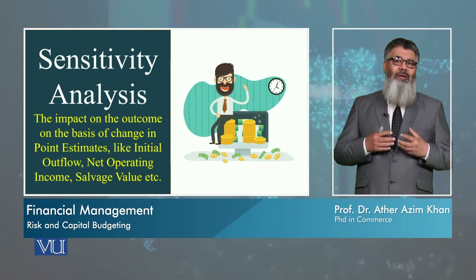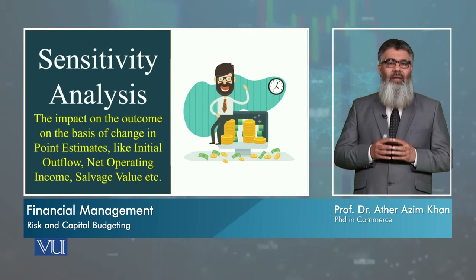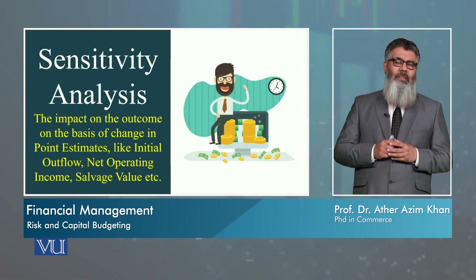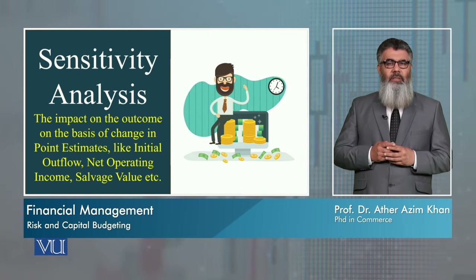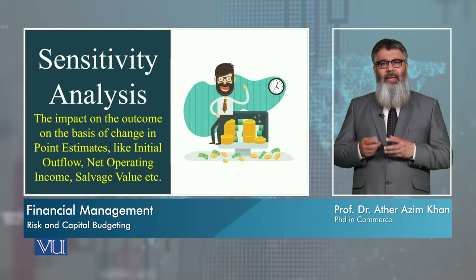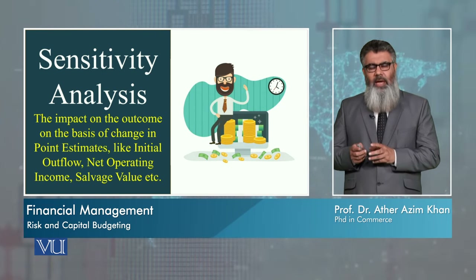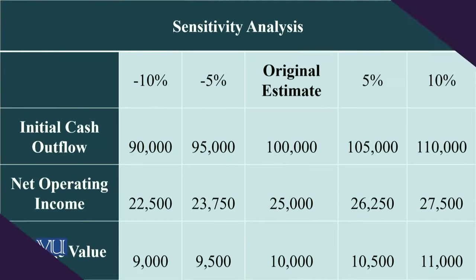In this process, we actually take the initial or original set of data — that is the outflow, the incremental inflows, and the terminal cash flow. Then once we have that, we see that if this goes up by 5, 10, 15, or 20%, what changes would there be. Let us have a look at this spreadsheet where we have the original estimates of our investment.